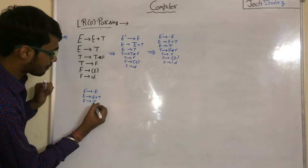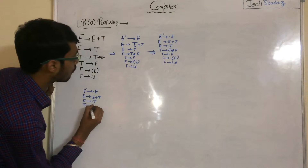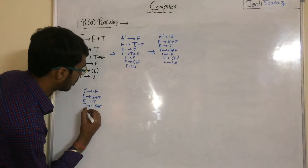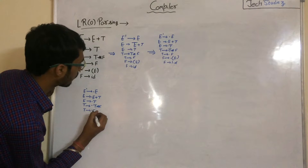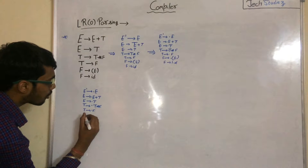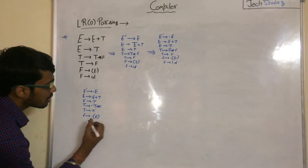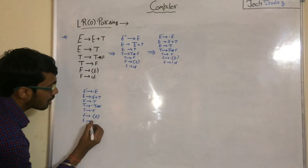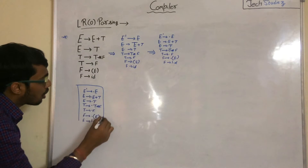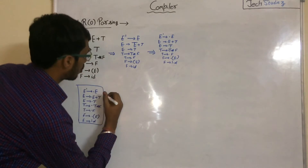After the dot we get a non-terminal T, so we add all productions from T: T to ·T star F and T to ·F. Again after the dot we get non-terminal F, so we add all productions from F: F to ·(E) and F to ·id. This set now contains all productions for I0.